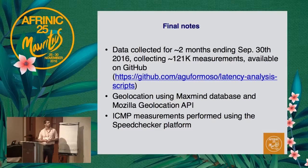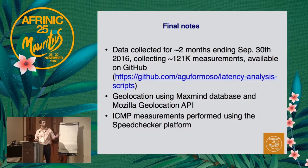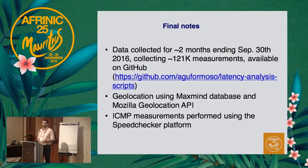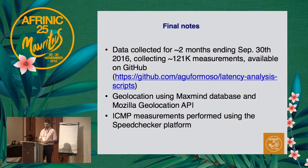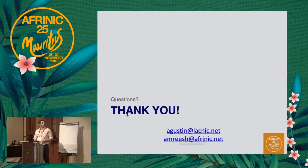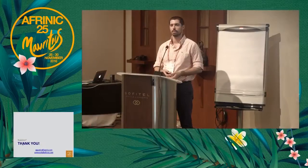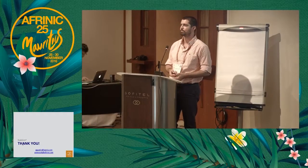Some final notes: we've been running this for two months, getting 101,000 measurements. Everything that's available is publicly available. We've used Mozilla and MaxMind for geolocation, and we use the Speed Checker platform to do our ICMP pings. And that's all. If you have any questions, please come to the microphone or have a chat with us in the corridor — we'll be around. Thank you.